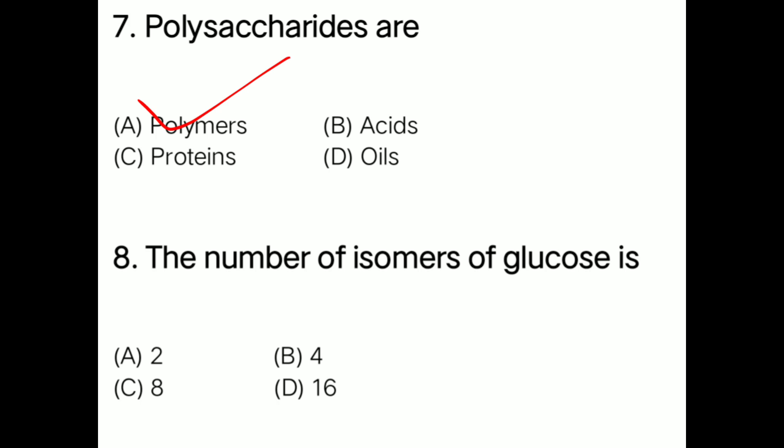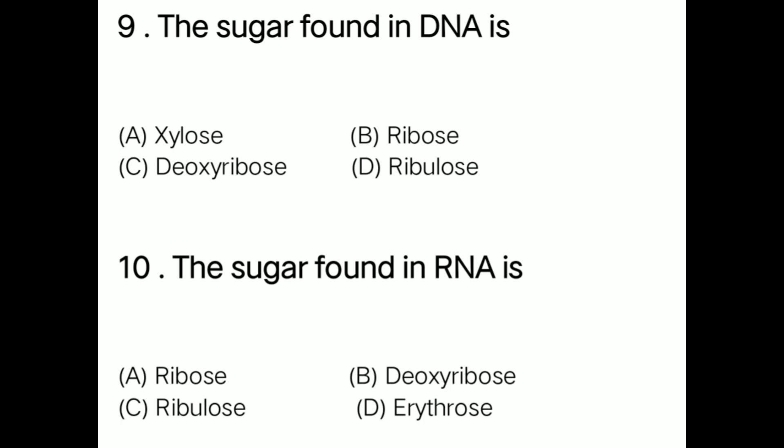Question 9: The sugar found in DNA is option A xylose, option B ribose, option C deoxyribose, option D ribulose, option D erythrose. Correct answer is option C: deoxyribose. Question 10: The sugar found in RNA is option A ribose, option B deoxyribose, option C ribulose, option D erythrose. Correct answer is option A: ribose.